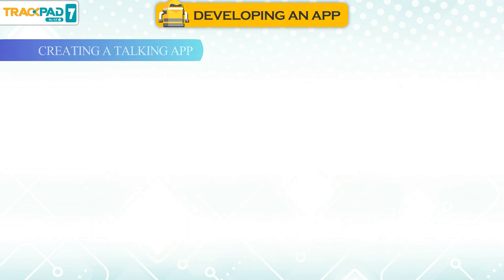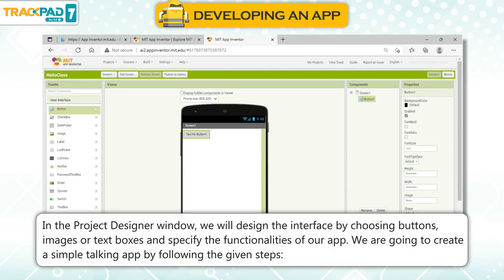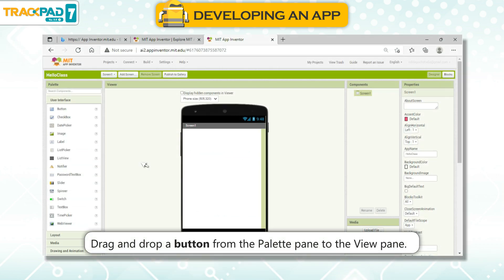Creating a Talking App. In the Project Designer window, we will design the interface by choosing buttons, images, or text boxes and specify the functionalities of our app. We are going to create a simple talking app by following the given steps. First, drag and drop a button from the palette pane to the view pane.